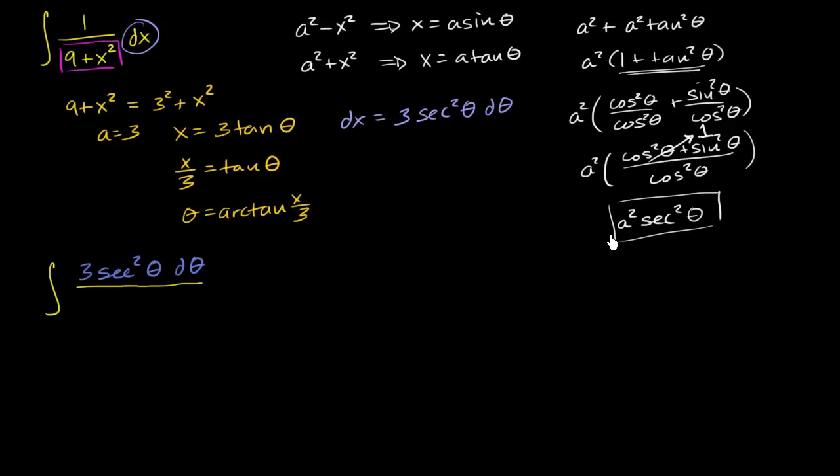We already know what that's going to simplify to. Since we made the substitution x equals 3 tangent theta, it's going to simplify to 9 secant squared theta. You're going to get 9 plus 9 tangent squared theta. Factor out a 9, you get 9 times 1 plus tan squared theta, which is 9 times secant squared theta.